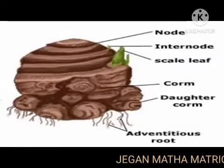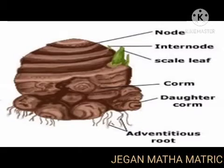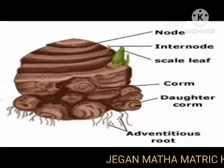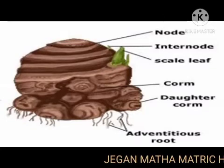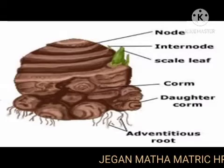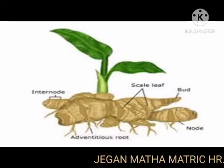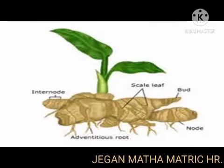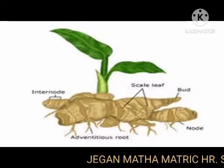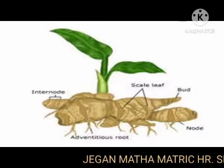Corm is a succulent underground stem with an erect growing tip. The corm is surrounded by scale leaves and exhibits nodes and internodes, example Colocasia. Rhizome is an underground stem growing horizontally with several lateral growing tips. Rhizome possesses conspicuous nodes and internodes covered by scale leaves.